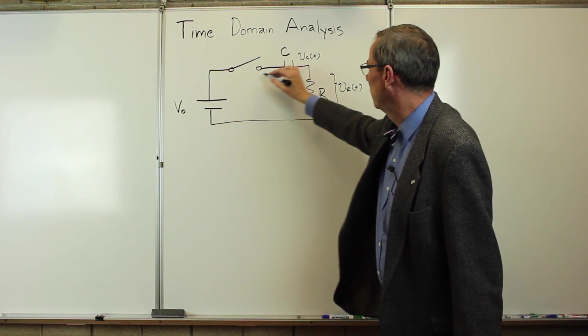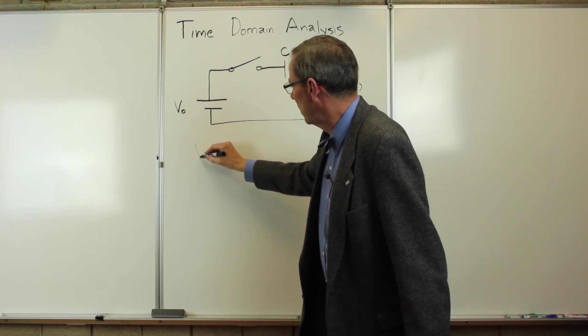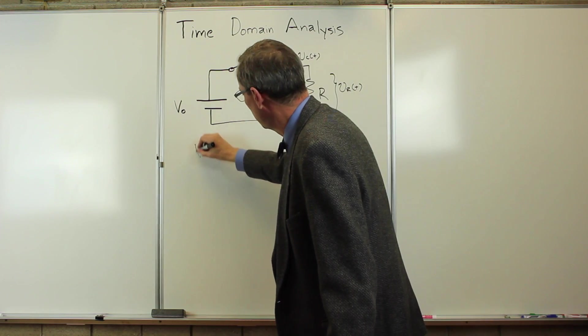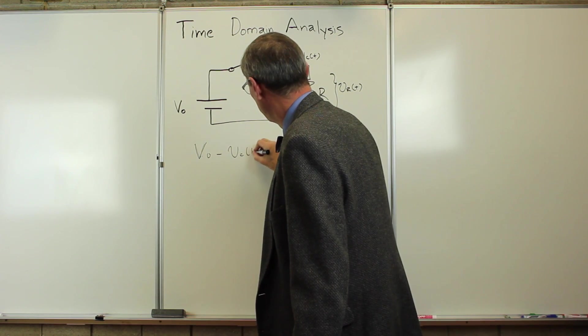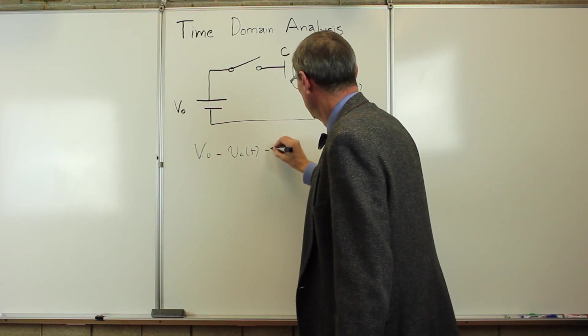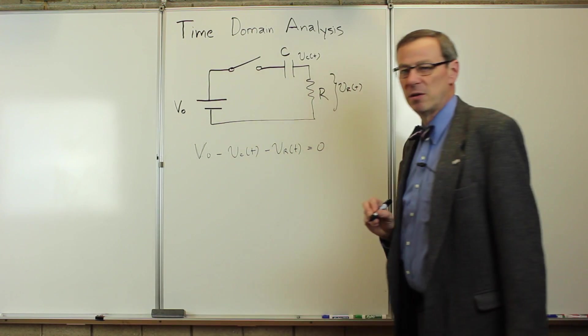The idea is that we have a Kirchhoff loop rule. So the voltage on the DC power supply, V0, minus the voltage across the capacitor as a function of time, minus the voltage across the resistor as a function of time, has to be zero.